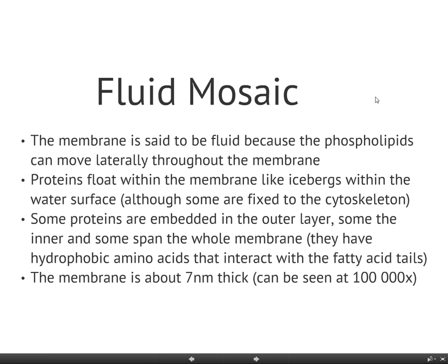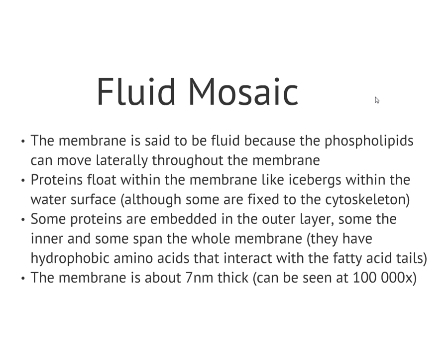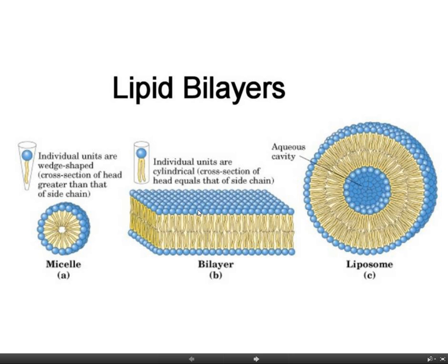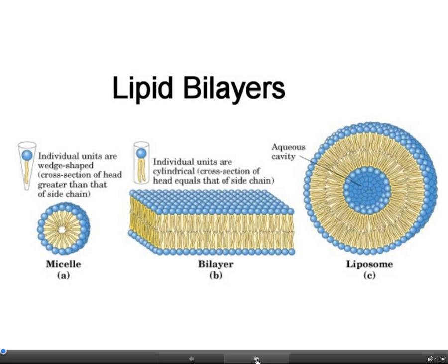This is called the fluid mosaic model, and that's basically because the phospholipids can move laterally throughout the membrane. What we mean by laterally is that a phospholipid here could slide past or swap positions with the one next to it — they can move left or right. They can't move up or down, they can't come out of the layer or move into the layer, but they can move sideways within the layer. That's what we mean by lateral movement of the phospholipids.